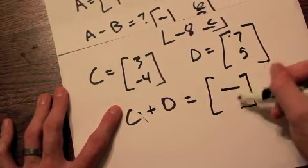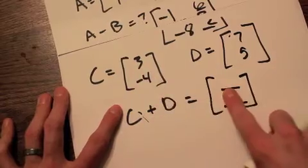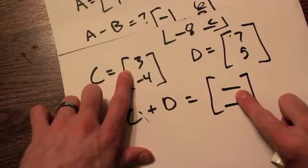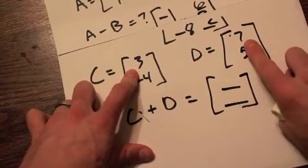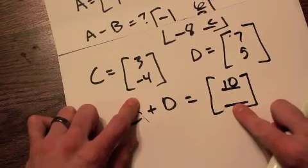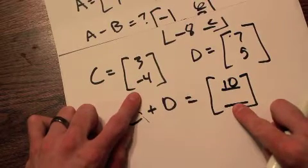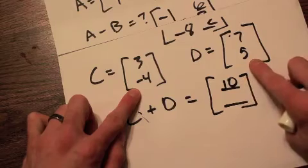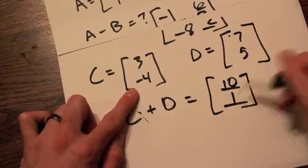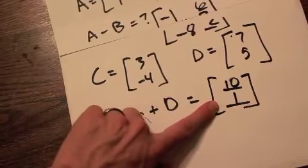Our first spot, add the first spots together. This is position one one, so add C one one and D one one. Three plus seven gives me ten. Position two one. C two one and D two one. Negative four plus five gives me positive one. So that is my answer.